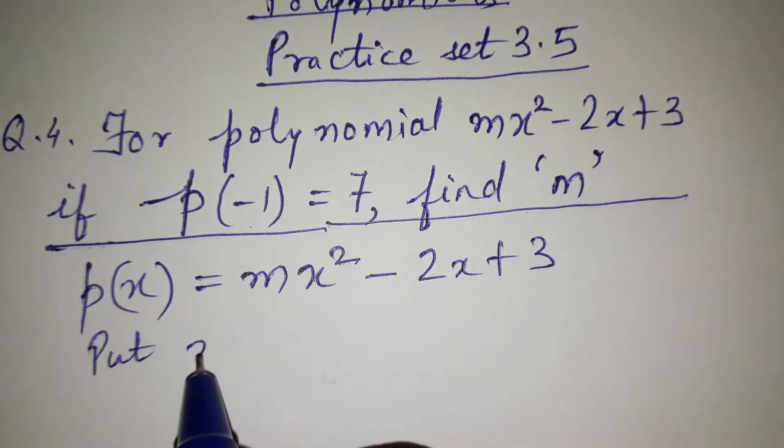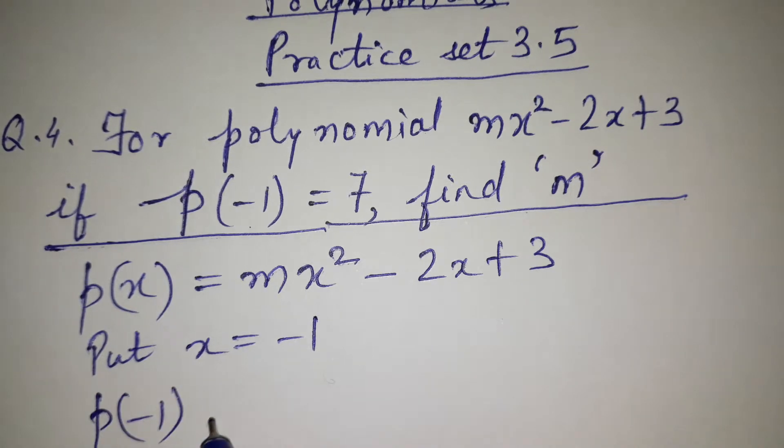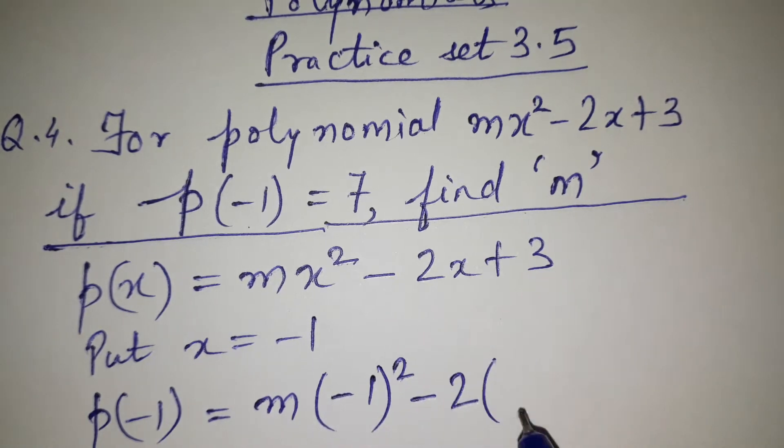Now we will put x = -1. So p(-1) = m(-1)² - 2(-1) + 3.